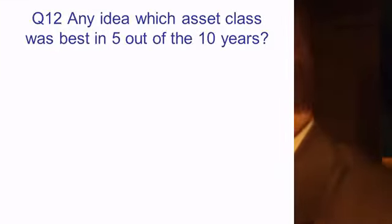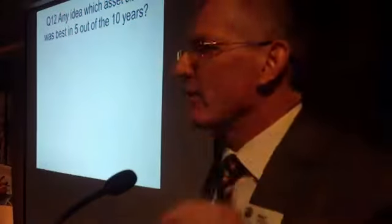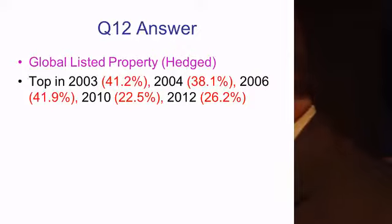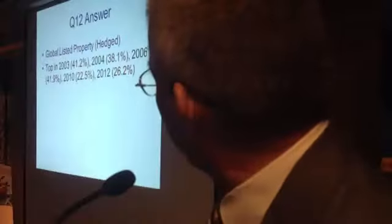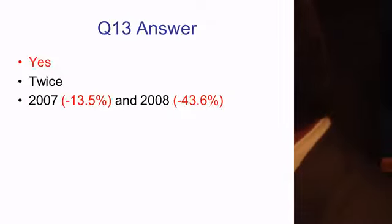So, here's one. Have you got any idea which asset class came top five years out of the last 10? New Zealand shares. No, we've had New Zealand shares. Property. What sort of property? Commercial. Where? Residential property. Don't go to that man for advice. It was global listed property hedged, and it was top five years out of 10. 41, 38, 41, 22, 26. Have you got a bit of global hedged property internationally in your portfolio? The next question is, was it ever worse in the 10-year period? Yes, it was worse twice, 13 and 43.